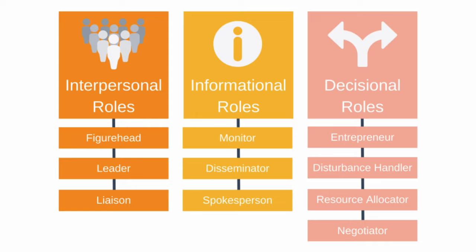The 10 roles are figurehead, leader, liaison, monitor, disseminator, spokesperson, entrepreneur, disturbance handler, resource allocator, and negotiator. They are organised into three broad categories. First, interpersonal roles concern how you interact with others. Informational roles involve collecting and transmitting information. And finally, decisional roles involve how you make your decisions. Let's take a deeper look at each of the roles.